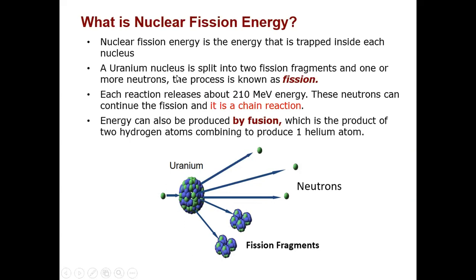The uranium nucleus gets split into two fission fragments and the binding energy change is released — about 210 million electron volts per reaction. The neutrons that are a byproduct are fast neutrons that come out of the fission reaction and then continue the chain by slowing down and being absorbed into another uranium nucleus.